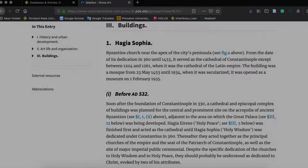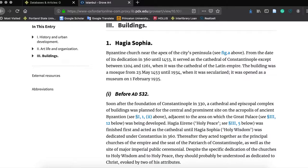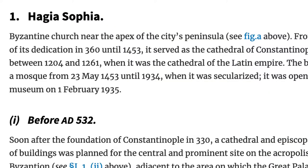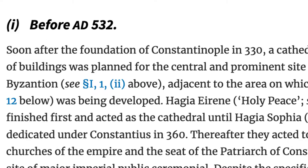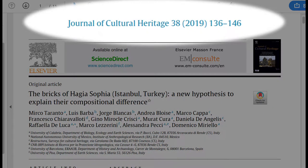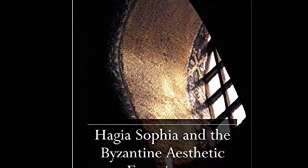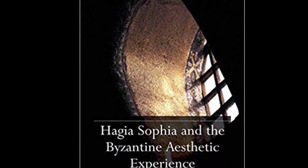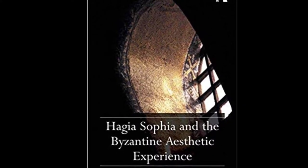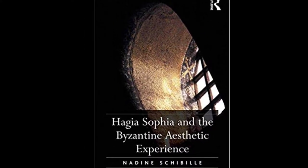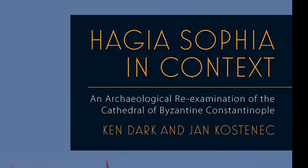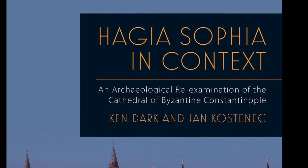But as is the case with the art exhibition we talked about, most of your research is going to be grounded in secondary sources — including specialized journal articles and books. There are quite a few books written on this specific building because of its importance in medieval architecture and in world architecture generally, and more continue to come out all the time. For instance, this one just came out in May 2019.